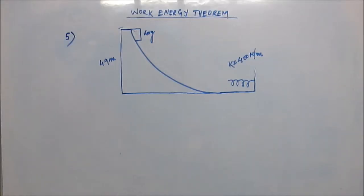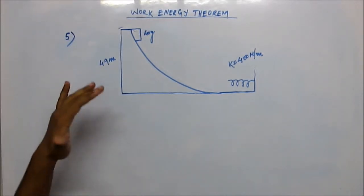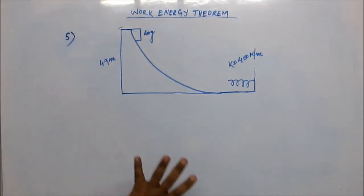In this problem we have a wedge and spring system. A mass of 40 grams is kept at the highest peak and it is allowed to come down. The height is 4.9 meters, this is a frictionless surface, mu is zero.